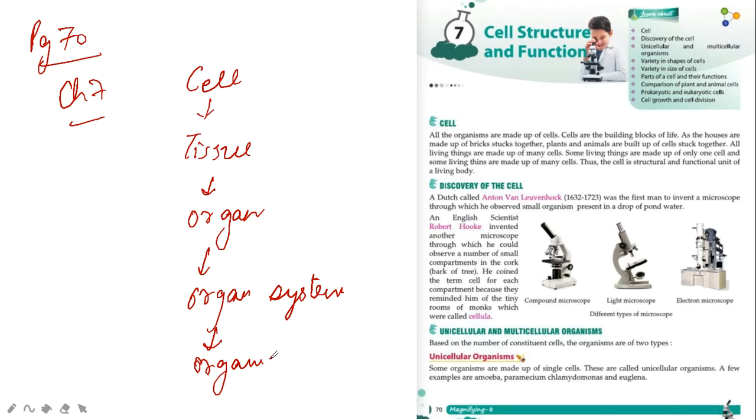Right, so this is the part. In all organisms, humans and mammals, this cycle continues. Cell leads to tissue, tissue leads to organ, organ leads to organ system and organ system to organism.